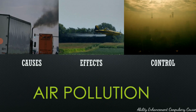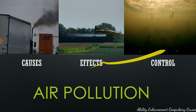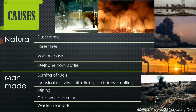Under each type of pollution, we will look at three subheadings: causes, effects, and control. The causes of air pollution can be either natural or man-made. Natural causes include dust storms, release of mold and pollen from plants, forest fires, ash released from volcanoes, and cattle releasing large amounts of methane. These are all examples of natural sources of pollution.